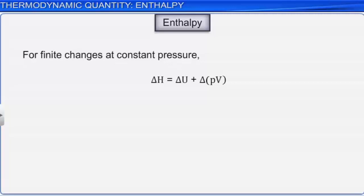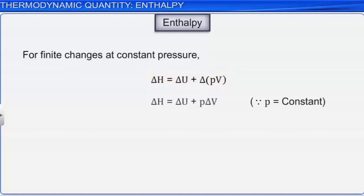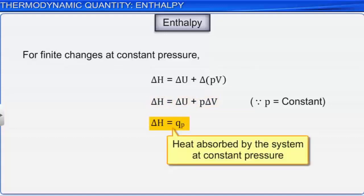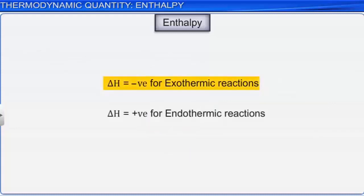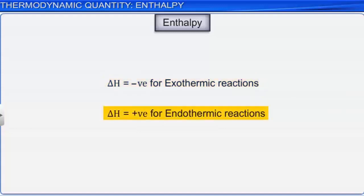For finite changes at constant pressure, we can write: delta H = delta U + delta(PV). Since P is constant: delta H = delta U + P × delta V. Remember that delta H = QP, the heat absorbed by the system at constant pressure. Delta H is negative for exothermic reactions and positive for endothermic reactions.